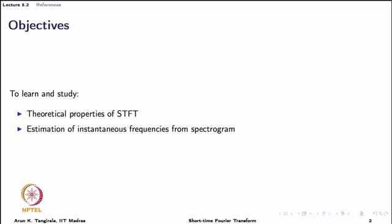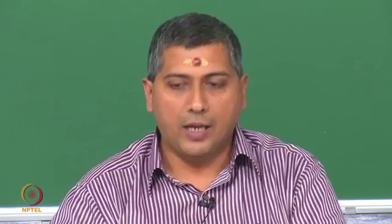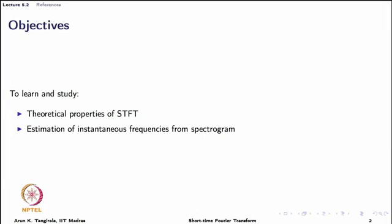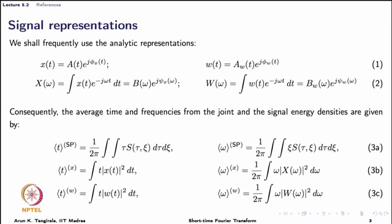Today we are going to talk about the theoretical properties, primarily referring to the spectrogram as a joint energy density. We have already seen that perfect recovery of the signal is possible from the short time Fourier transform, and therefore it can be used for filtering applications. We will also talk about estimation of instantaneous frequencies from the spectrogram using MATLAB, and we are going to use the Wavelab toolbox today, so you may want to keep your MATLAB window ready with Wavelab installed and set on your path.